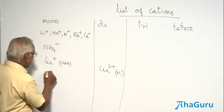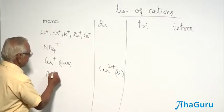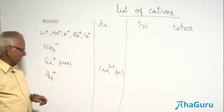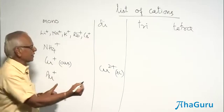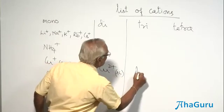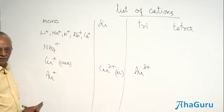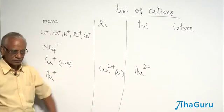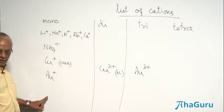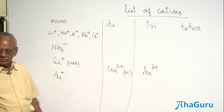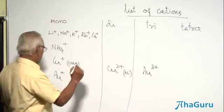Gold has got variable valency. You know the symbol for gold, Au, from aurum. Gold has got valency 1 and 3, Au3+. Aurous, auric. Aurous chloride, AuCl. Auric chloride, AuCl3.